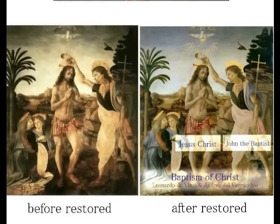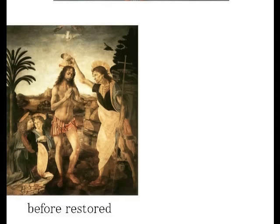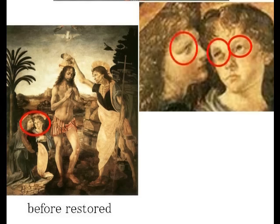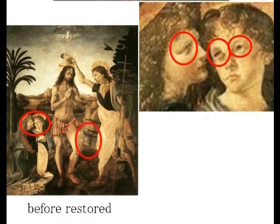ベロッキオとダ・ヴィンチが描いたと言われているキリストの洗礼の中に、二人の子供が描かれています。この二人の子供は餌です。この子供たちの顔を見てください。目は腫れ上がり、鼻はつぶれ、頬には傷があるというように虐待を受けた子供の顔が描かれています。修復前の絵では目の周りにクマができており、虐待を受けた子供の絵であることが分かります。